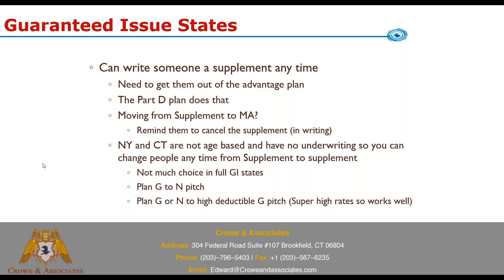New York and Connecticut aren't age-based and have no underwriting, so you can change people whenever you feel like it. The problem is in GI states there's not much to choose from — usually just the Blues and United as the two most competitive carriers. However, the high-deductible G pitch works super well in guaranteed issue states because the Plan G and N premiums are so high it makes the math on high-deductible G overwhelmingly work — it almost mathematically just makes total sense.